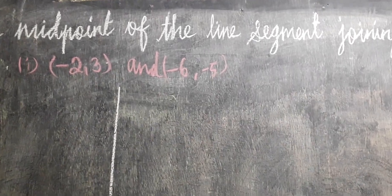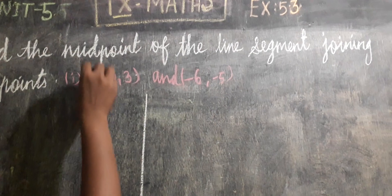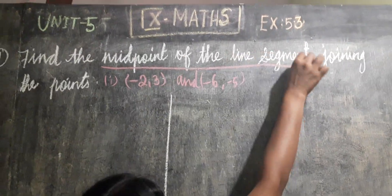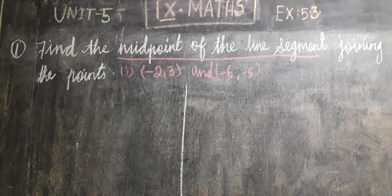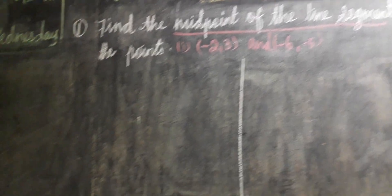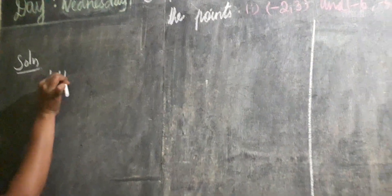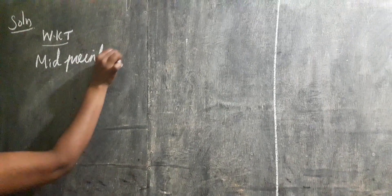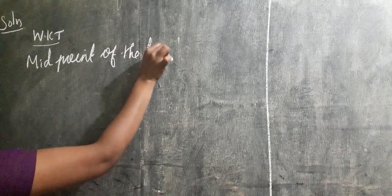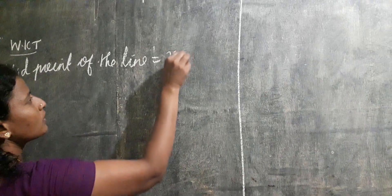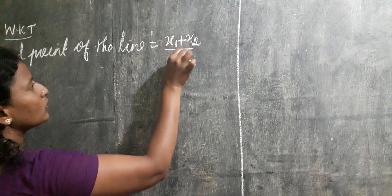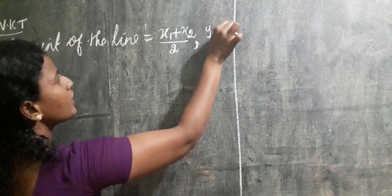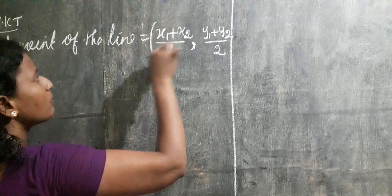They have given two coordinates and we have to find the midpoint of the line segment. In this exercise we have to study how to find the midpoint. We know the formula: midpoint of the line is (x1 plus x2) divided by 2, comma, (y1 plus y2) divided by 2. This is the midpoint formula.